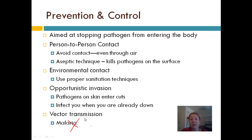So those are just some tips and tools to prevent and control pathogen outbreaks. We looked at viruses, bacteria and how to treat them with antibiotics, fungi, protists, and finally animals — a wide variety of pathogens for one of the disease mechanisms. Thanks for listening.